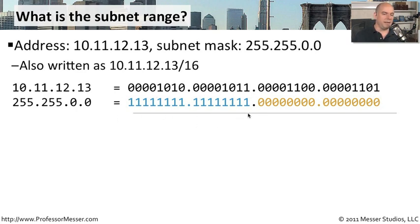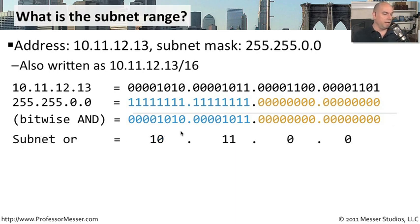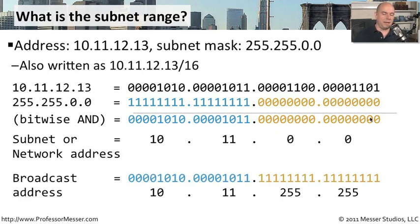Again, I've taken the network address and made it blue, and the host addresses are in gold. We perform the bitwise AND: everywhere there's a one, I bring down the one; every time there is a one and a zero, or a zero and a zero, I bring down a zero. Converting that binary result to decimal gives us a subnet address of 10.11.0.0. Taking all the host zeros, changing them to ones, and converting back gives us the broadcast address of 10.11.255.255.